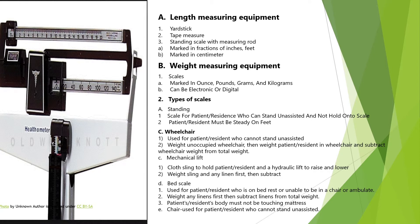Weight Measuring Equipment: Scales marked in ounces, pounds, grams, or kilograms. Can be electronic or digital. Types of Scales — Standing Scale: for a patient or resident who can stand unassisted and not hold on to the scale; patient or resident must be steady on their feet.